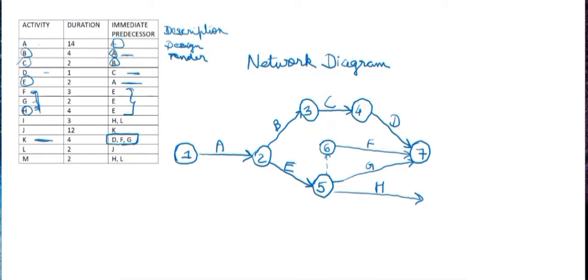Then as we already know that our next activity is activity K for which the immediate predecessor activities are D, F, and G, and all the three activities meet at the node 7. So this is how we can draw our next activity which is activity K.